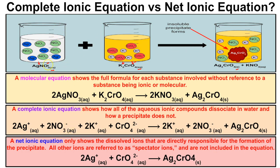In this beaker we have silver nitrate. When we put silver nitrate in a solution of water — that is, when we make it aqueous — what happens to an ionic compound is it dissociates in water; it breaks apart. So in this water we're going to have silver ions floating around with some nitrate ions.